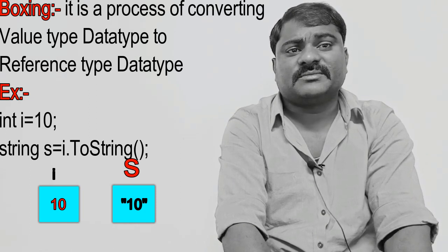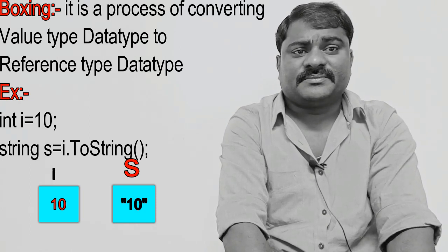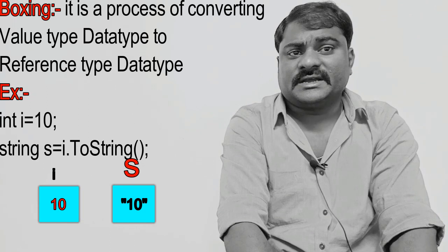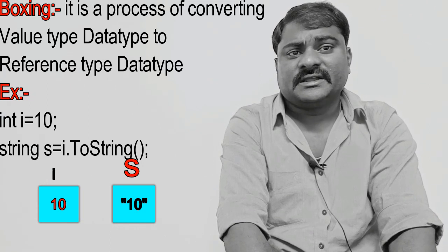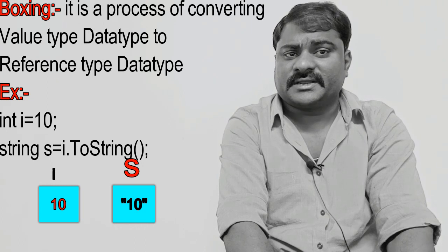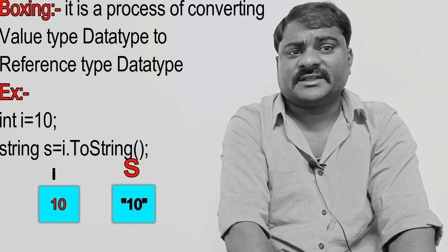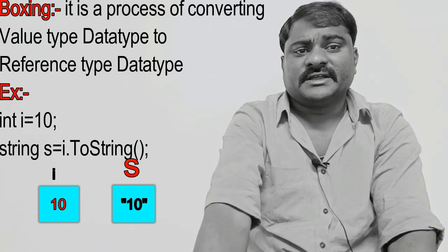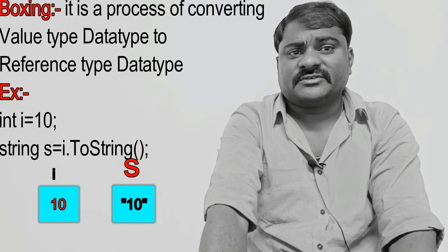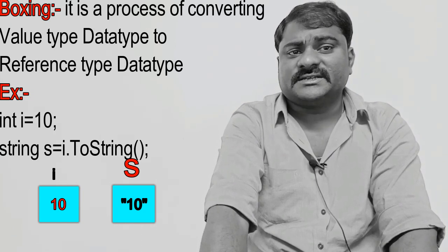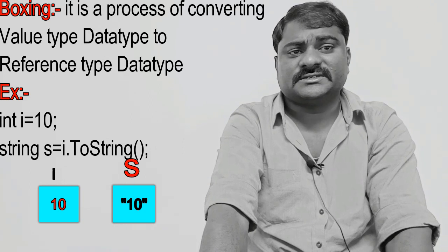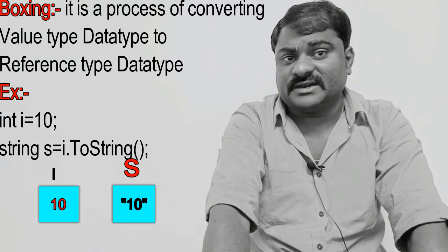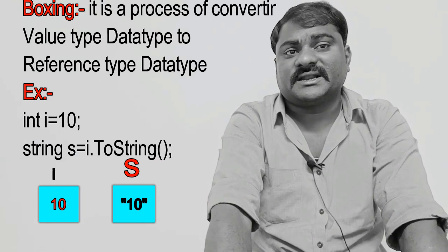Here I have given one example. I declared int i equal to 10, string s equal to i.ToString(). Here i is an integer variable, s is a string variable, and ToString() is a method. What this ToString() method does is convert the integer value to string. So boxing requires explicit typecasting — we have to write the code manually to convert one data type value to another data type.